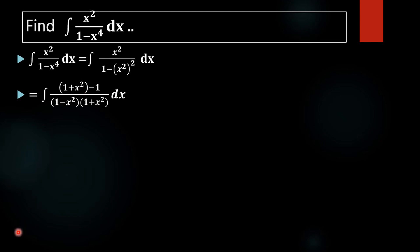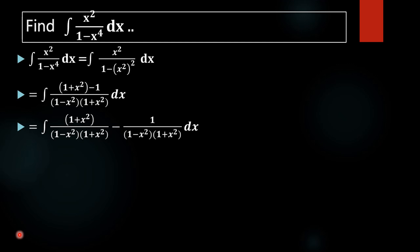In the next step we are splitting the numerator into 2 terms: that is, 1 plus x squared divided by 1 minus x squared into 1 plus x squared, minus 1 divided by 1 minus x squared into 1 plus x squared dx. That is, we are splitting this numerator into two terms here.